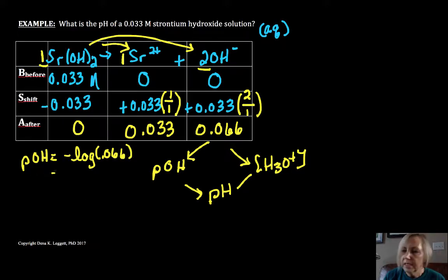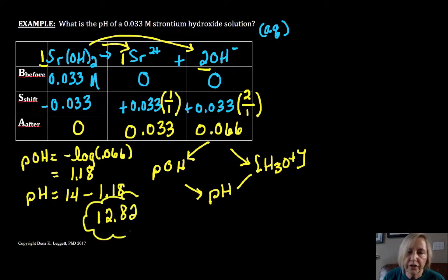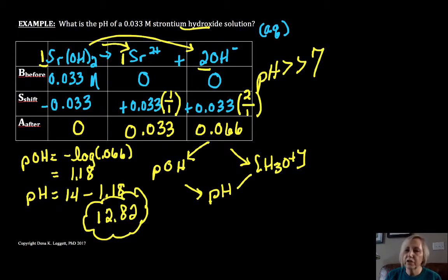I did this direction here, so my POH is equal to minus the log of 0.066. You might want to try the other direction, make sure you get the same numbers as I do. So my POH is 1.18, so pH is equal to 14 minus my POH, so I get a pH of 12.82.